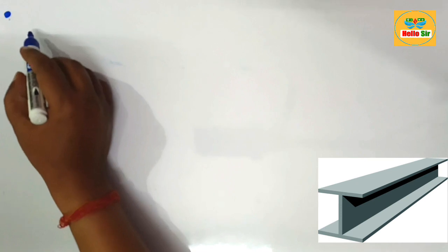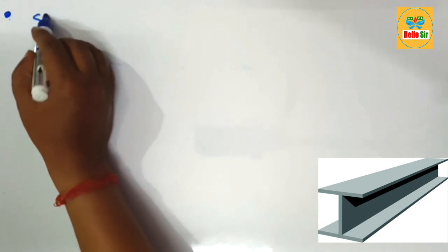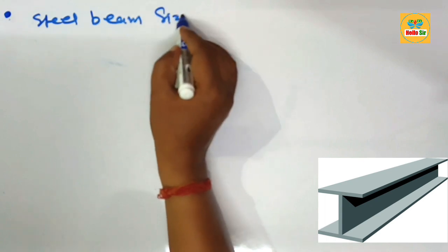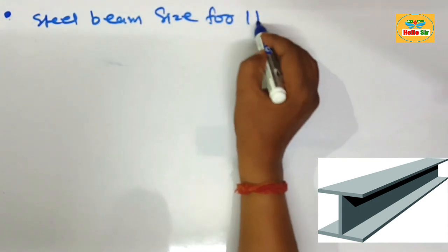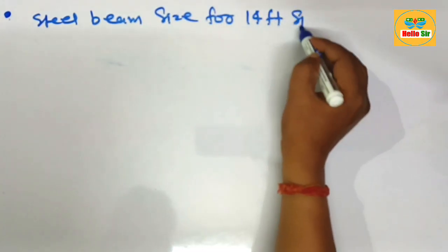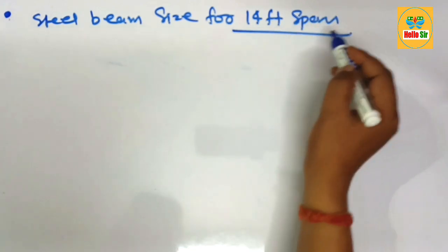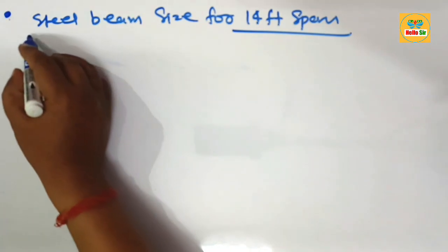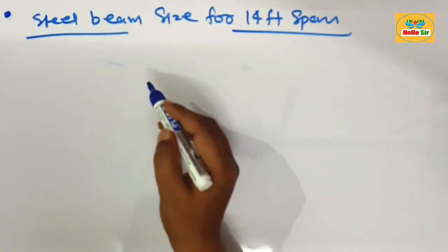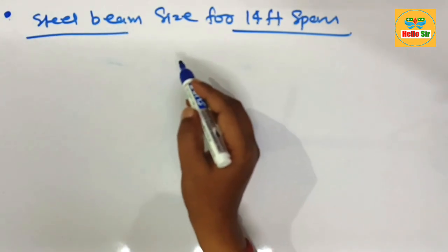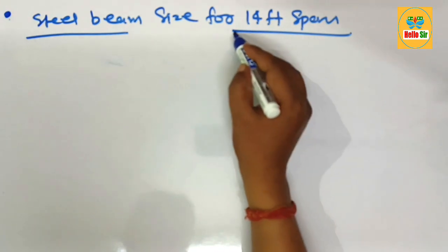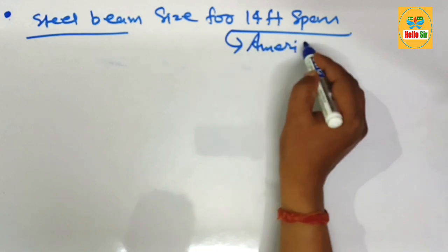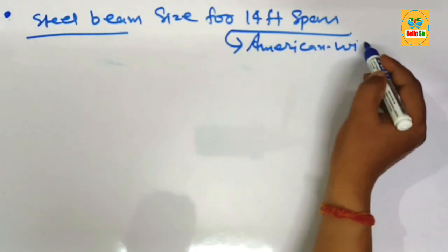Today in this video we'll learn about steel beam size for a 14-foot span. You have a span length of about 14 feet, the beam type is steel, and the question is: what size steel beam do I need for a 14-foot span? As you know, the steel beam is the American Wide Flange beam.